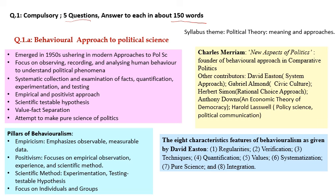First, look at the question — the exact question is: 'Behavioral approach to political science.' Just this phrase — you have to write on it in a short mini paragraph, two paragraphs. First, see where it comes from in the syllabus: the theme is 'political theory: meaning and approaches.' From there, one of the most important modern approaches is the behavioral approach — that is how they picked this question.